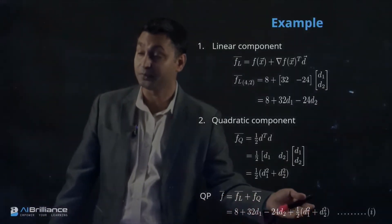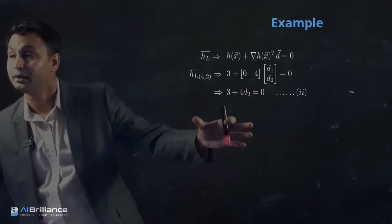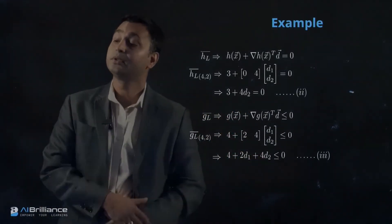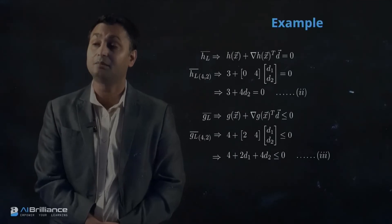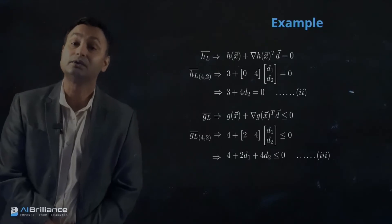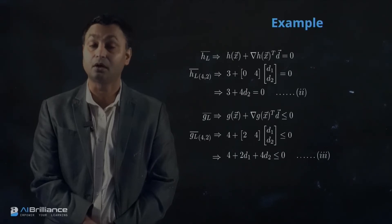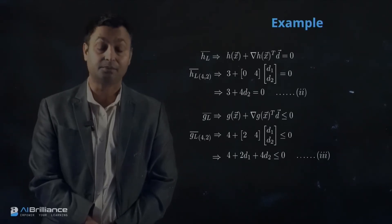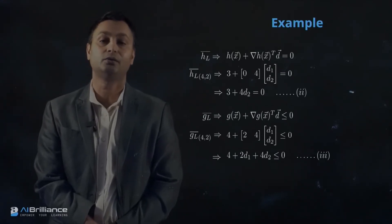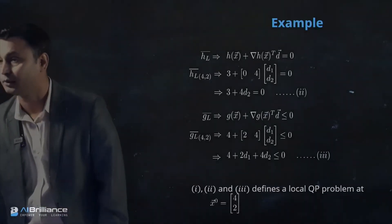Now we assemble the sequential quadratic program: equation one is the quadratic objective function, equation two is the linear equality constraint, and equation three is the linear inequality constraint. Combining equations one, two, and three gives us a constrained quadratic programming problem — a slightly modified version of the original problem. Equations one through three together define the local quadratic programming problem at x0 = (4, 2).